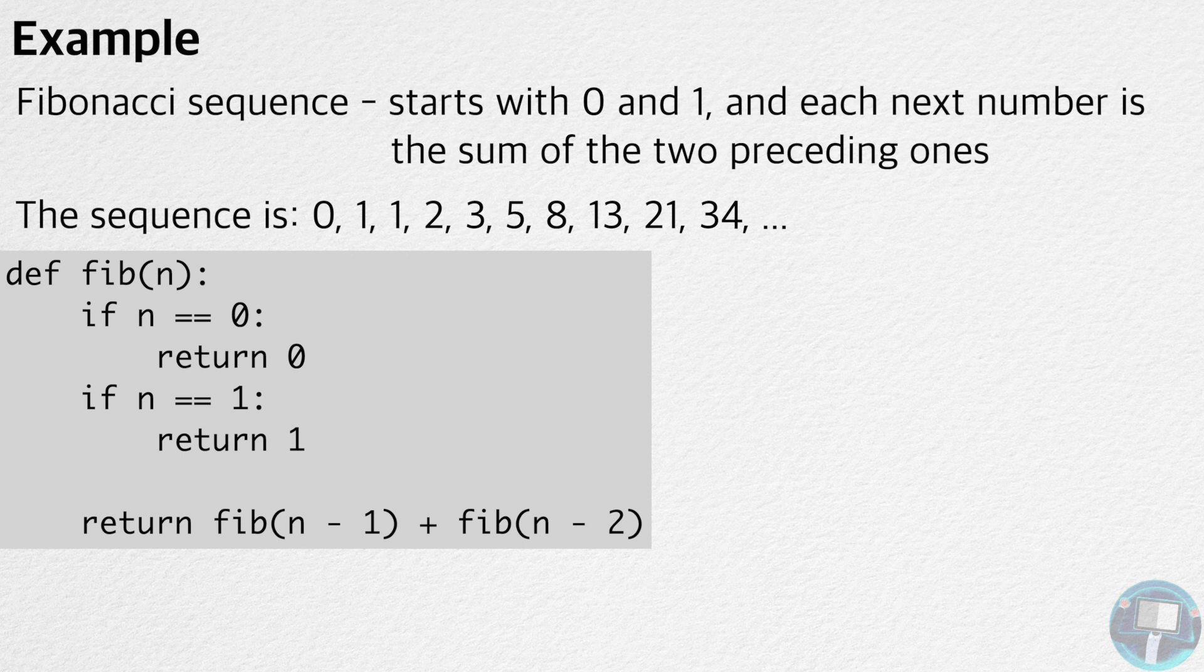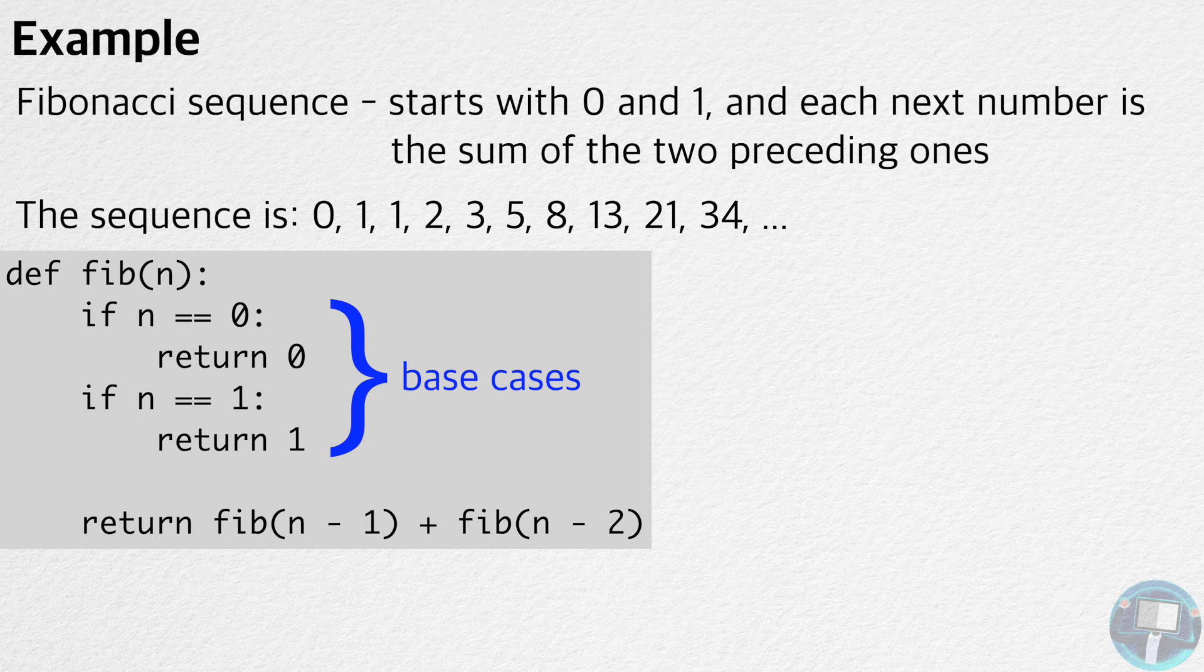We first prove the two base cases. The 0th Fibonacci number is 0, and the first Fibonacci number is 1. Therefore, the base cases are correct.